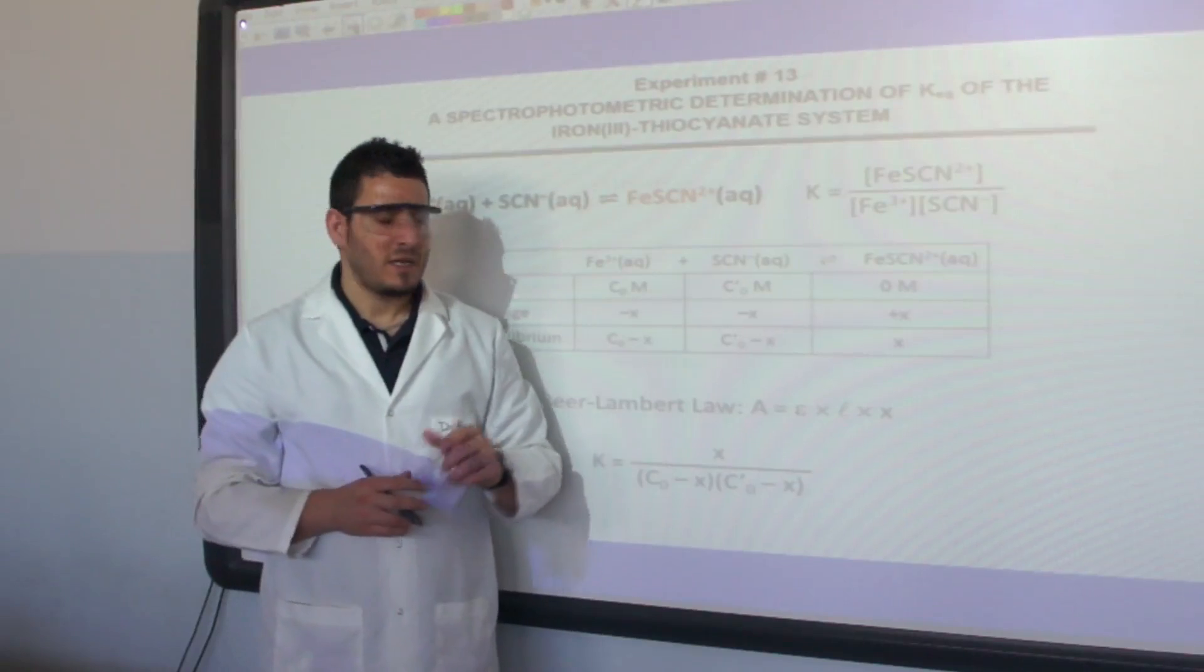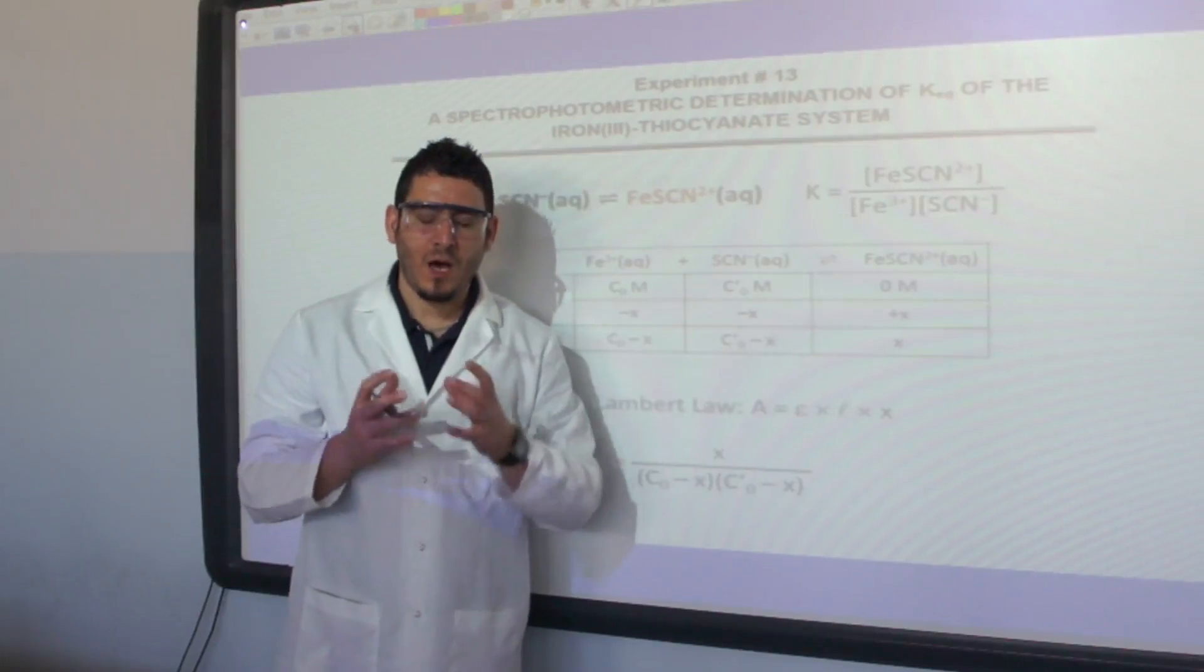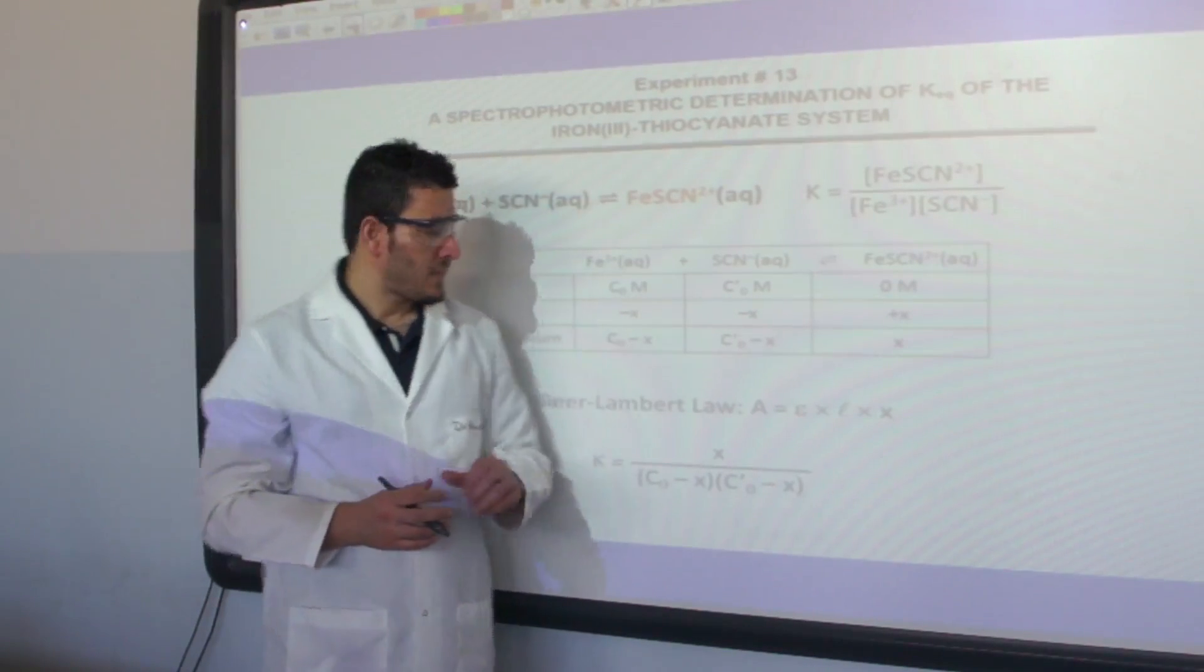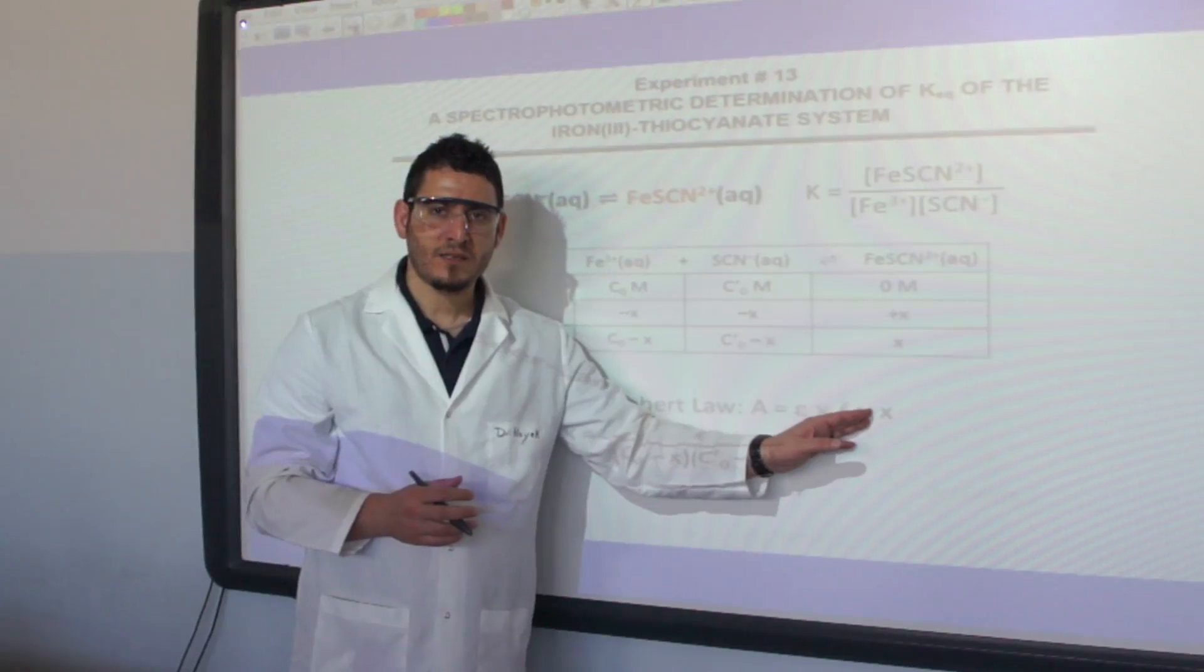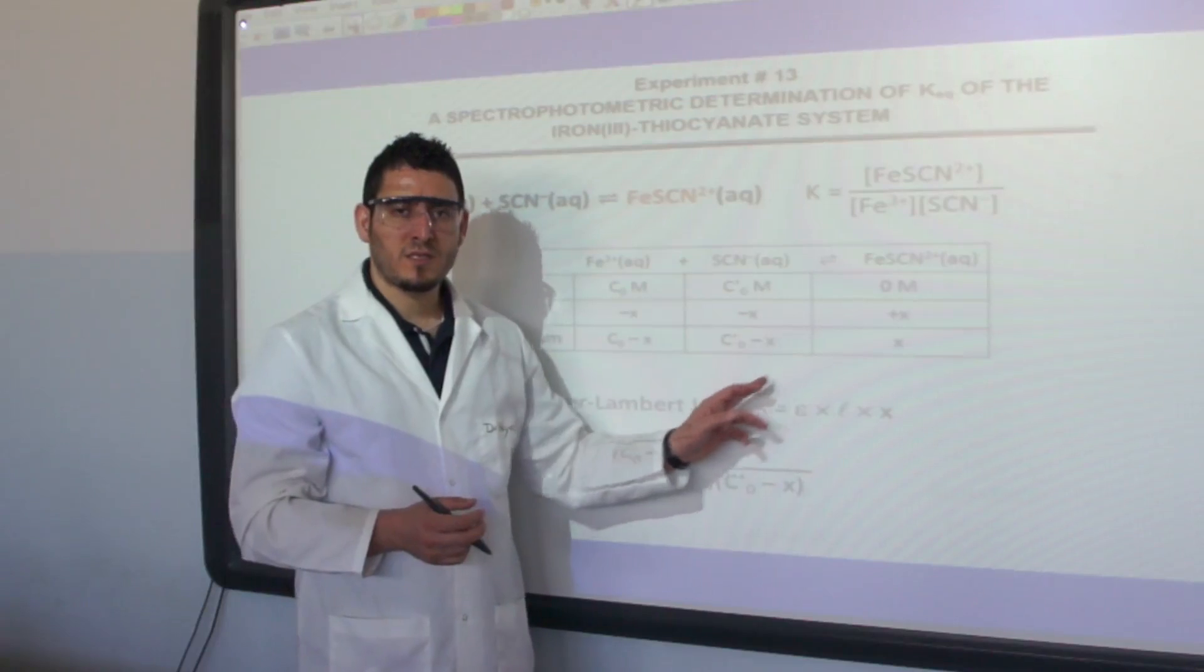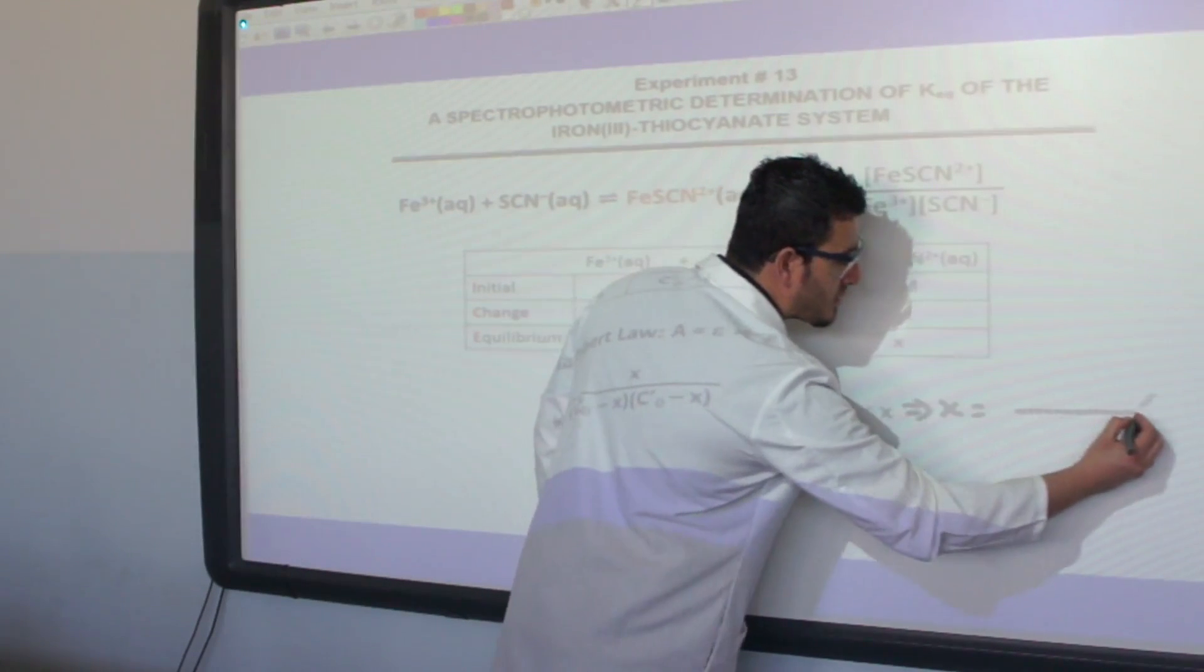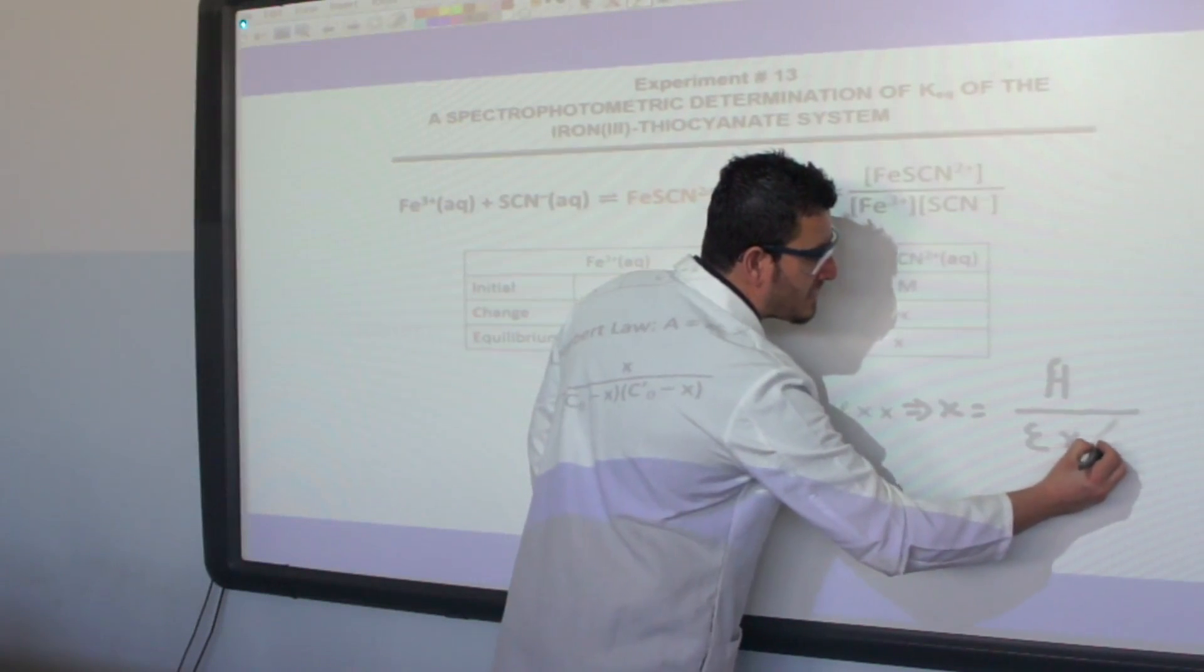The reason I need a colored solution is that I can use Beer-Lambert law to determine X. If I measure the absorbance of the solution, which is going to be the absorbance of the iron thiocyanate complex, using Beer-Lambert I can say absorbance is equal to epsilon times L times X. To find X, I can say X is equal to absorbance divided by molar absorptivity multiplied by L. So X equals absorbance divided by epsilon multiplied by L.